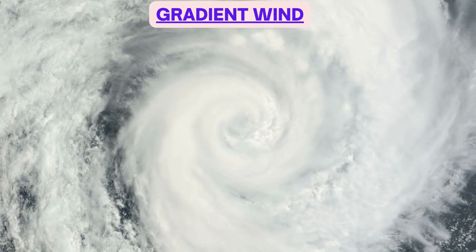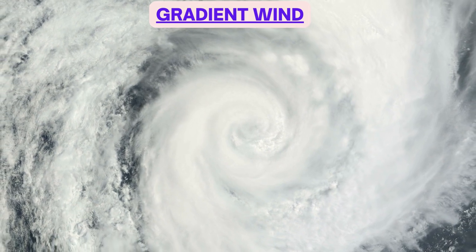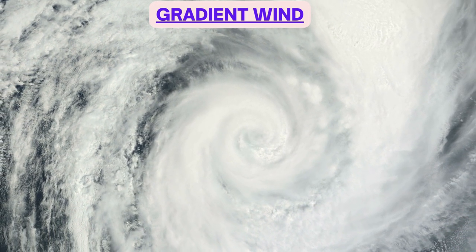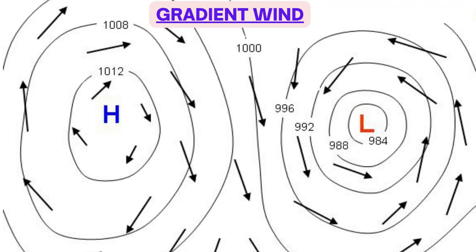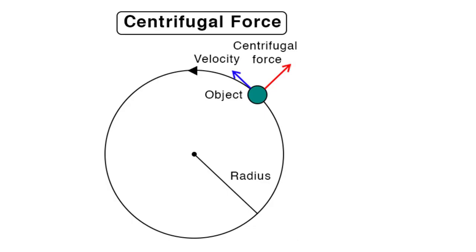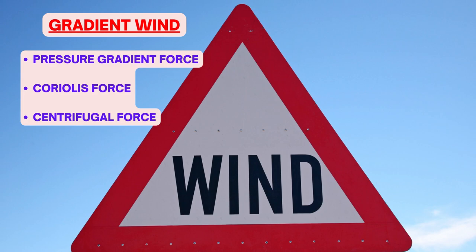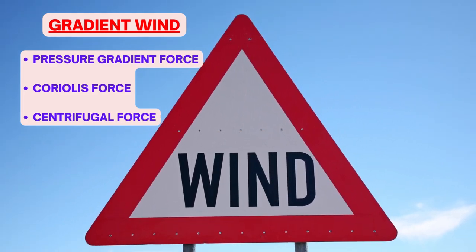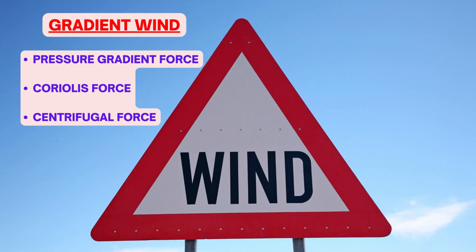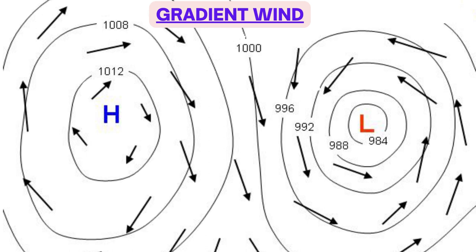Moving on to the gradient wind: the gradient wind is the mathematical modeling of winds blowing in and around curved isobars, like in a cyclone or anticyclone. Where there is curved or circular motion involved, centrifugal force comes into play. Centrifugal force is experienced by all objects moving in a circular path, which tends to push the object radially outwards from the center of the circle. So gradient wind blows under the influence of three forces: pressure gradient force, Coriolis force, and centrifugal force. Wind blows parallel to isobars but follows a curved path, not a straight path.